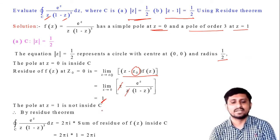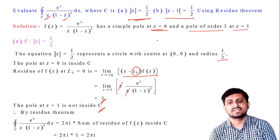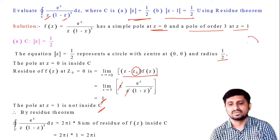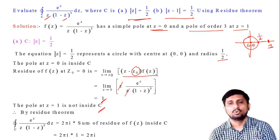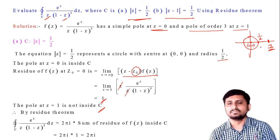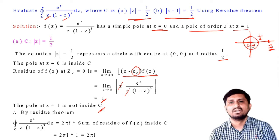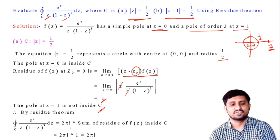The pole at z=1 is not inside C, because for the circle |z|=1/2 with center (0,0) and radius 1/2, the point z=1 is outside the circle. So only z=0 is inside C, and we only need the residue at z=0. Therefore the value of this integration is 2πi × 1 = 2πi.